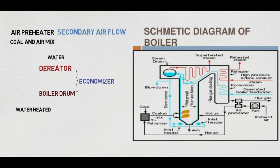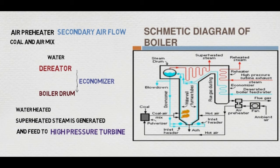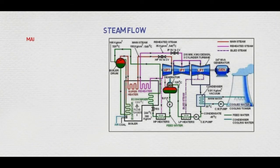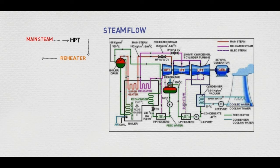The superheated steam generated is used to run the turbine, and it is fed to the HPT — that is, the high pressure turbine. The main steam from the superheater is fed to the HPT. From the HPT, the steam is reheated through the reheater and it is fed to the IPT — that is, the intermediate pressure turbine.